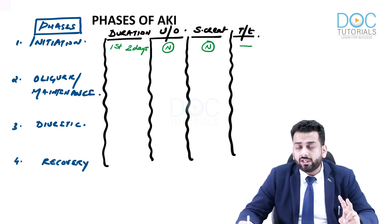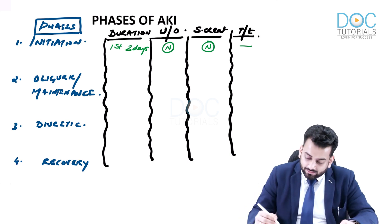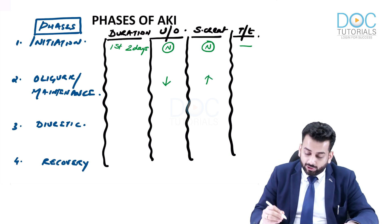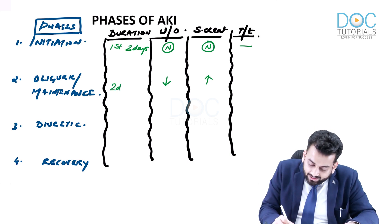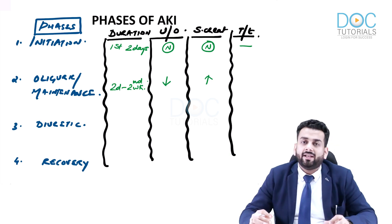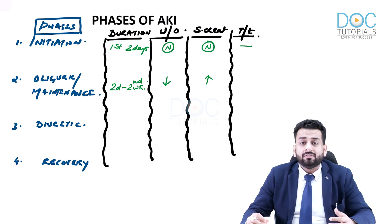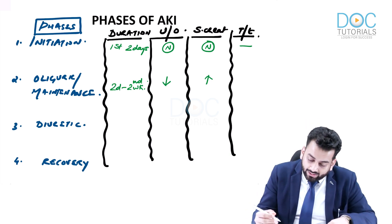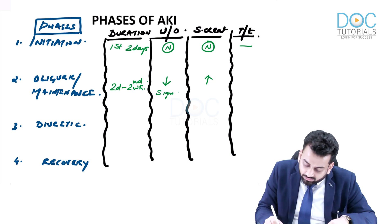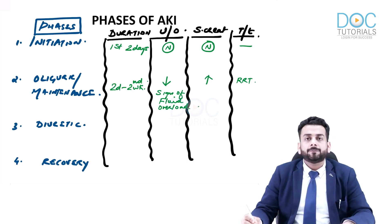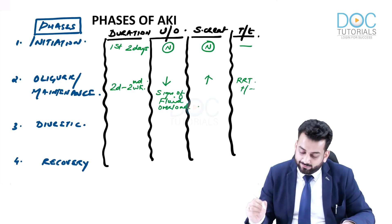Phase two is the oliguric or maintenance phase. As the name implies, urine output starts to decline and serum creatinine rises. This phase lasts from approximately day two to the end of the second week — about ten to twelve days. Due to oliguria, the patient develops signs of fluid overload, and renal replacement therapy may be required.